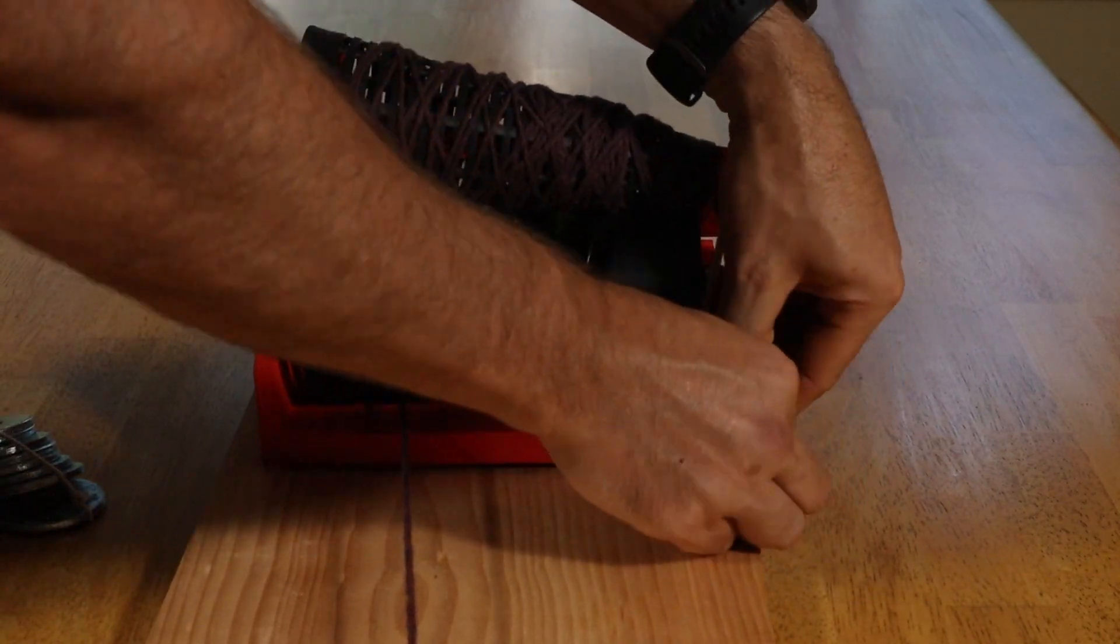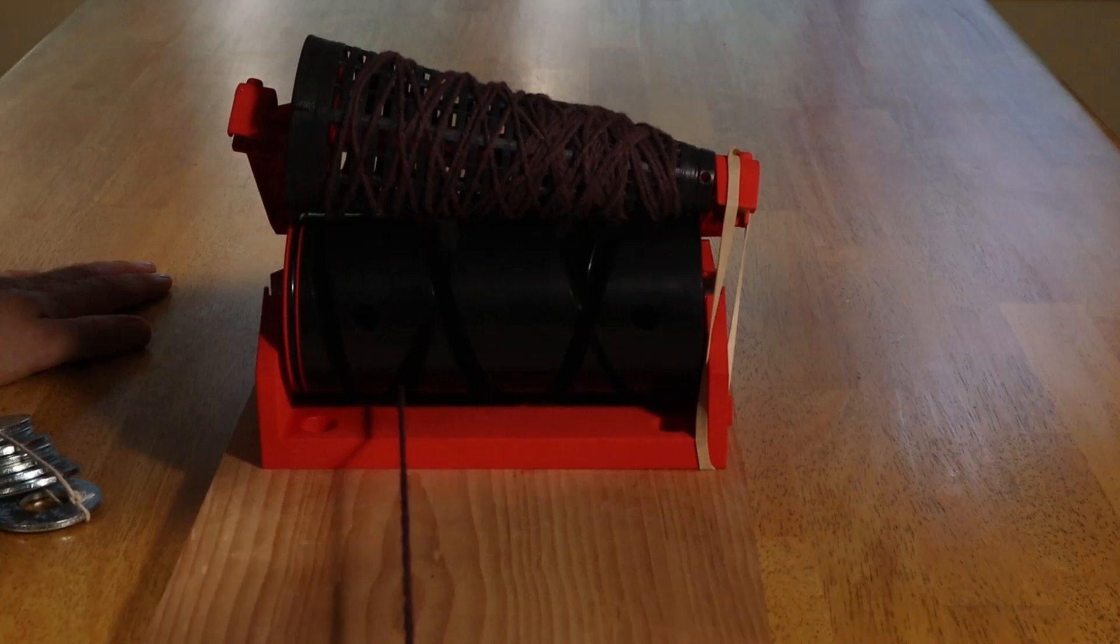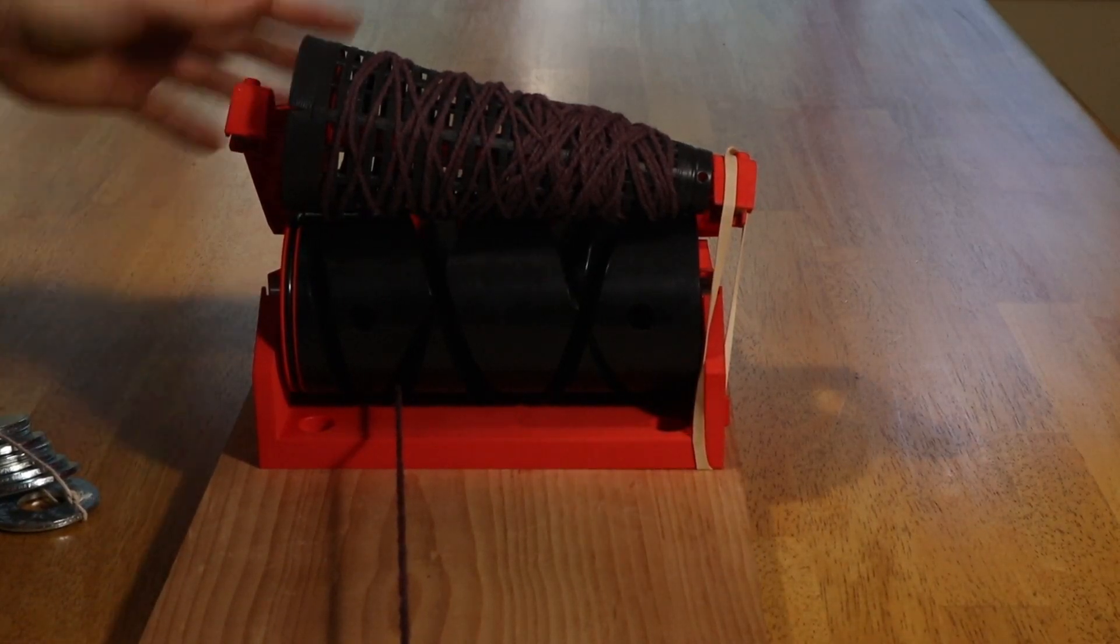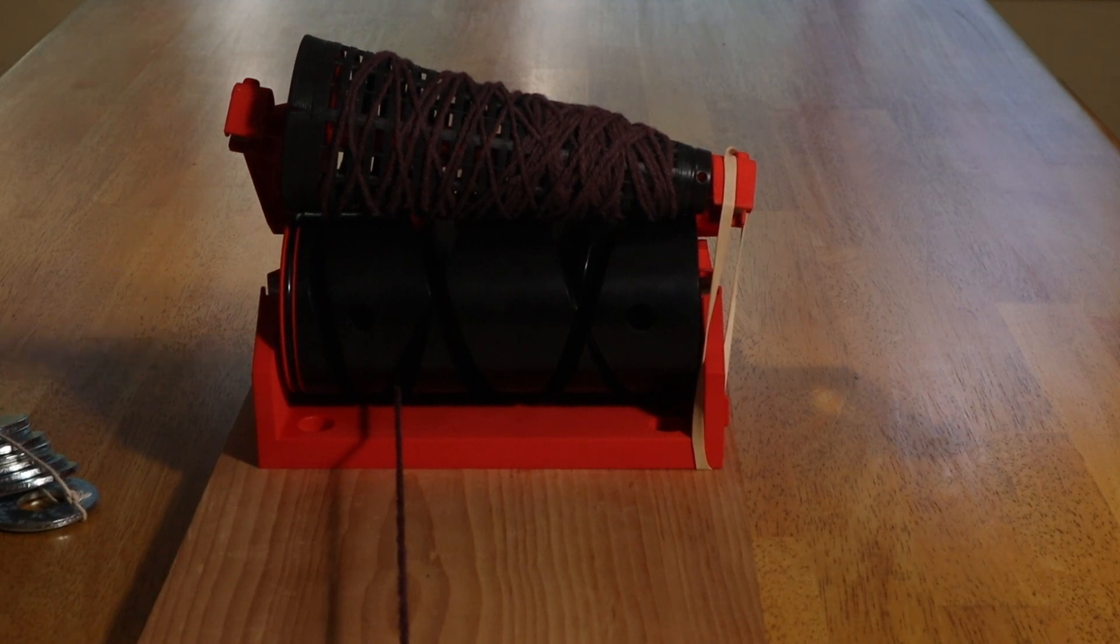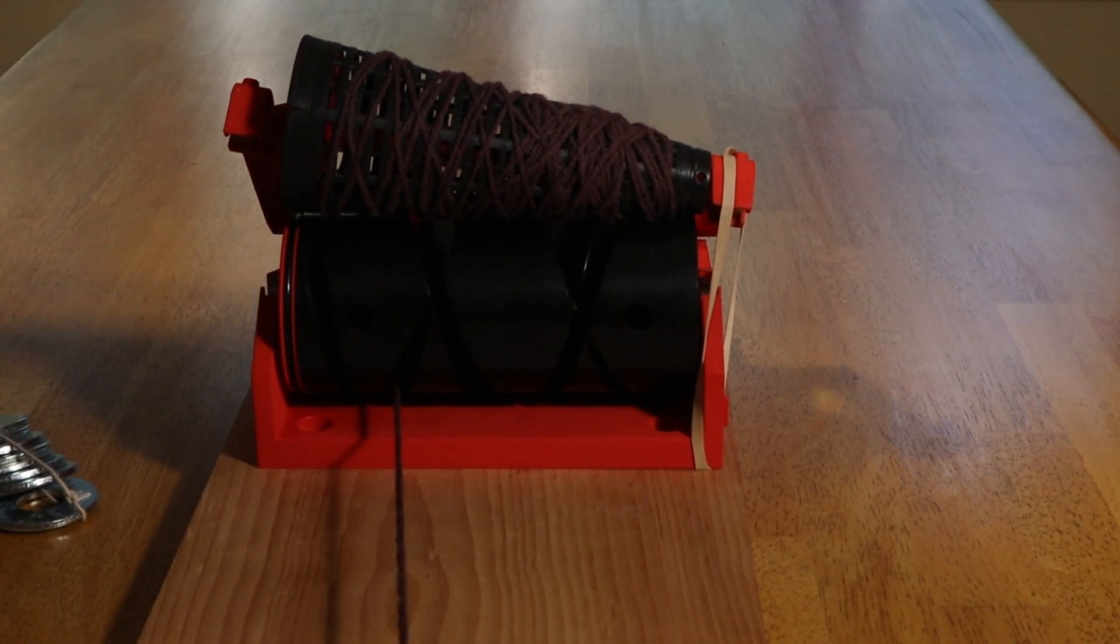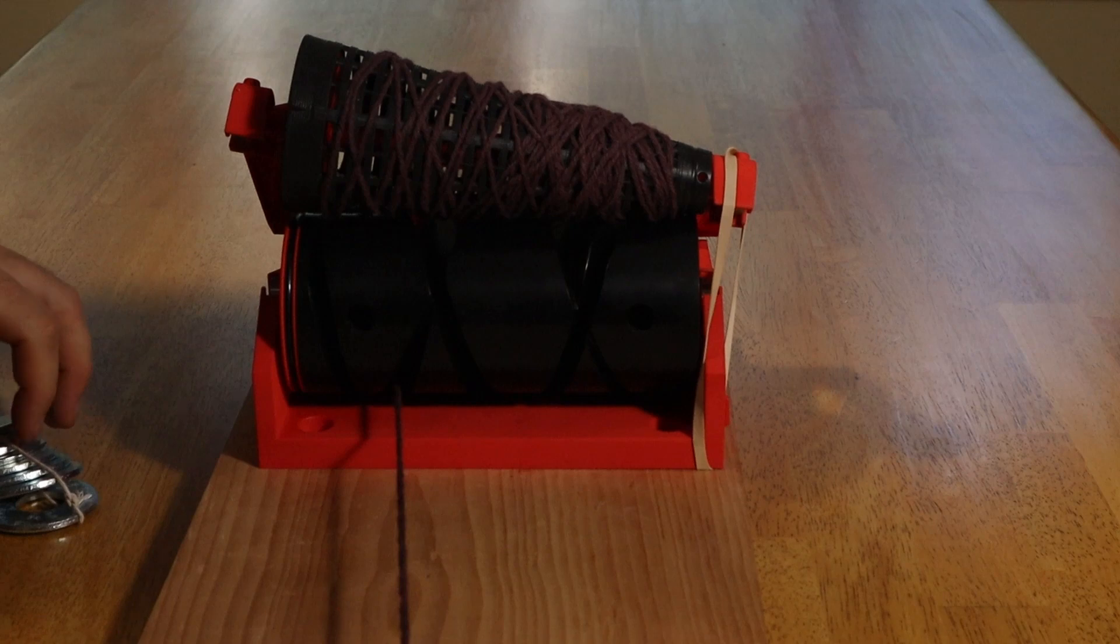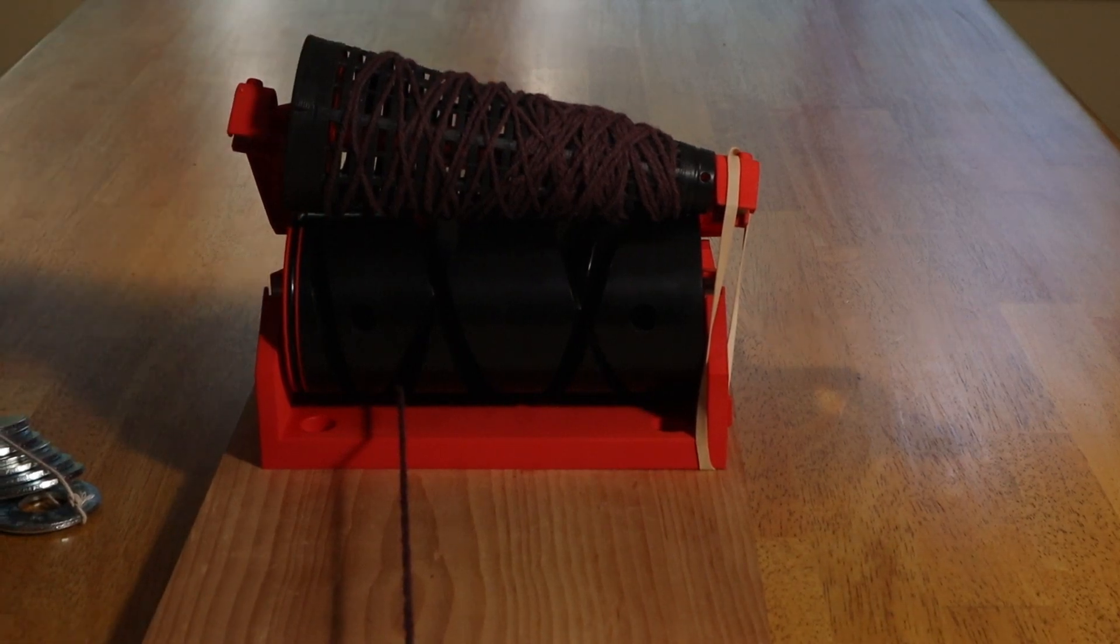So on industrial cones they have really heavy arms and they have weights on there so this isn't really a problem - there's a lot of downward force on the cone. But because I wanted to make this light and inexpensive to make and ship and easy to use at home, I didn't want to put all that weight, so I put some springs in there.